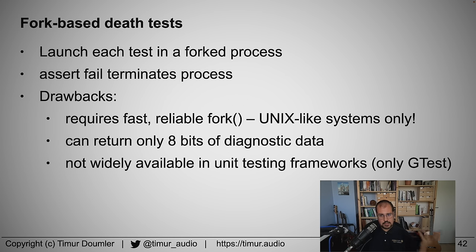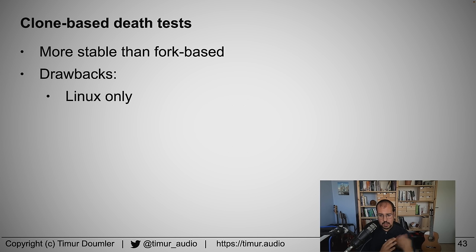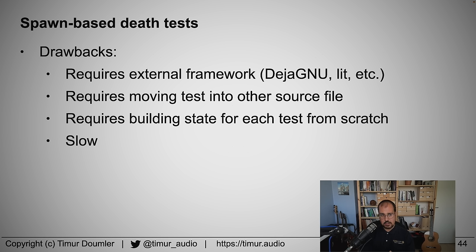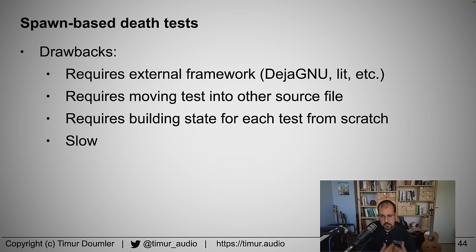Clone-based death tests are even more restricted — Linux only. Spawn-based death tests spawn a new process for every test case; you can probably do this on every platform with multiple processes, but it's really complex to set up. No unit testing framework will do that for you — you need an external framework like Deja Gnu. You also need to move your tests into a different source file. And it's very, very slow — spawning a new process for every test case makes your test suite run in ten minutes instead of five seconds. A lot of people are just not going to bother doing that.